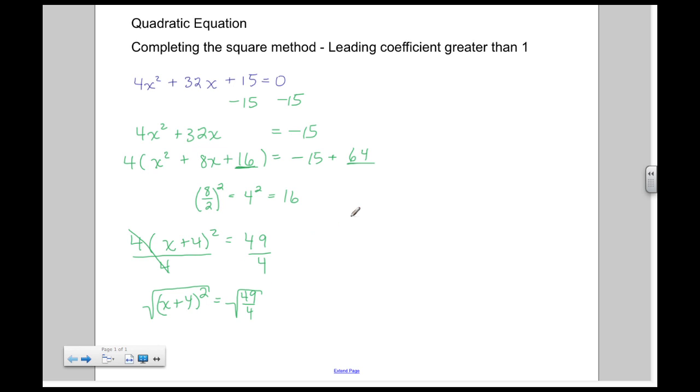Now to get rid of this squared portion, I need to take the square root of both sides. In doing that, this quantity becomes x + 4. And on the right-hand side, I have ±—well, the square root of 49 is 7 and the square root of 4 is 2. With the plus and minus, I now have two equations. First equation is x + 4 = 7/2, and the second equation is x + 4 = -7/2.